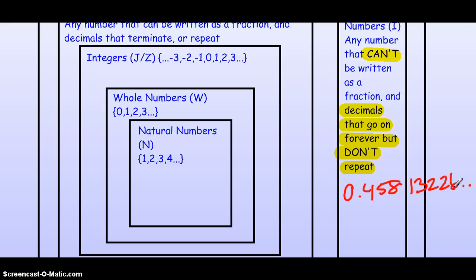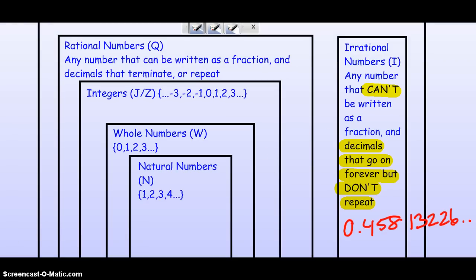The most common, or the most popular, I should say, irrational number would be pi. Because when you write that out, you'll know that goes on forever, but there's not a repeating sequence in there. So, that is the difference between a rational and an irrational number.